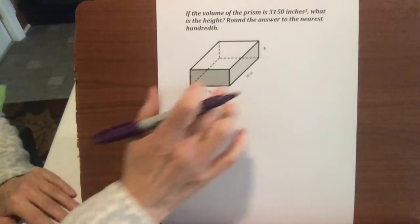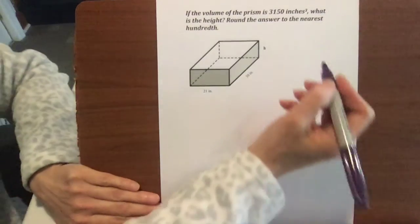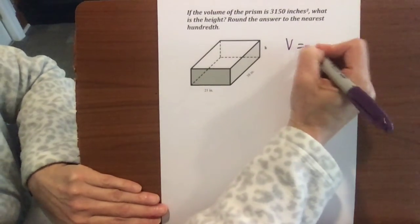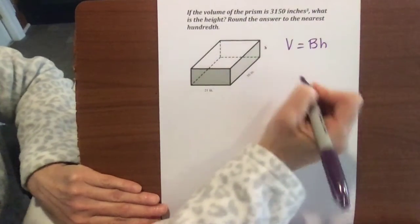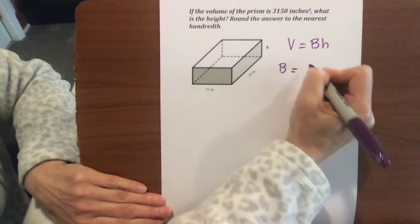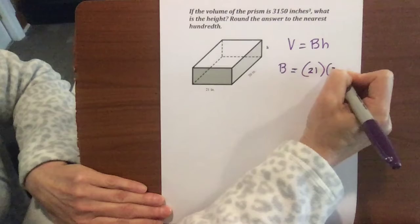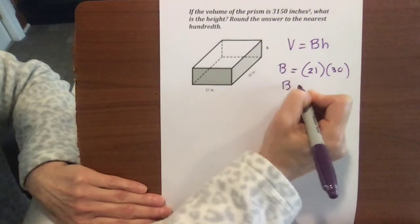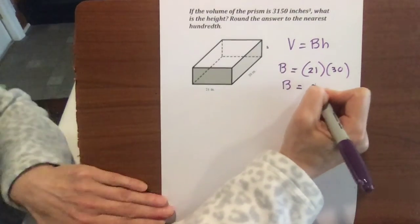All right, what if we're missing a piece? We could be missing a length, a side, a height, whichever, width. So again, our base area, we know it to be length times width times height. So our base area in this case is 21 times 30. So our base area is going to be 630, and that's inches squared.